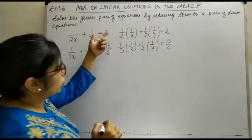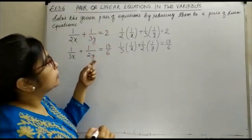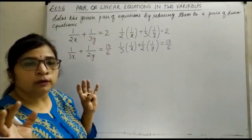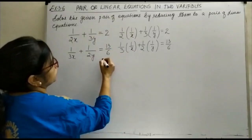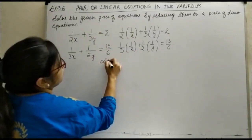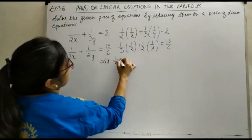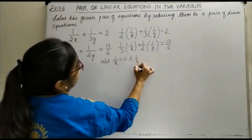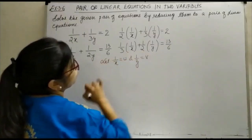Okay, so you can see that in both these equations, your 1 upon x and 1 upon y are common. So we will substitute them, let 1 upon x is equal to u and 1 upon y is equal to v.